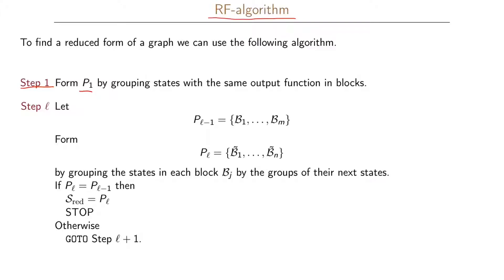The next steps are called step l. Let P(l-1) be the set of B1 to Bn. For l equals 2, the first time we do this step, we have the states from P1 — exactly the grouping of states with the same output function. Then for Pl, the first time being P2, we find new groupings of states by grouping the states in each block Bj by the groups of their next states.